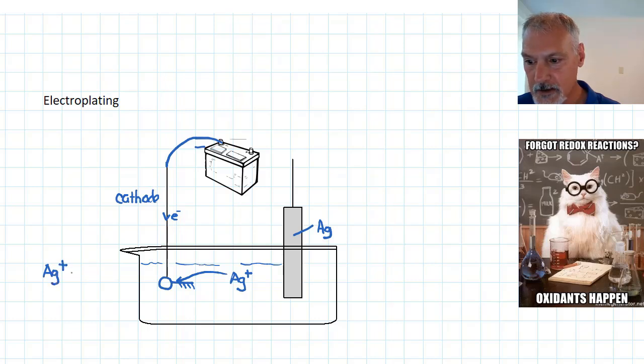So this would be the reaction. Silver ions picking up those electrons and turning into solid silver on the surface of that key.